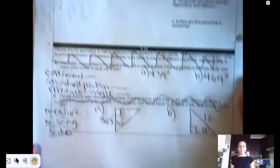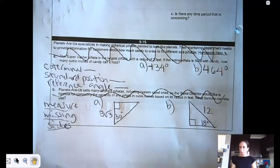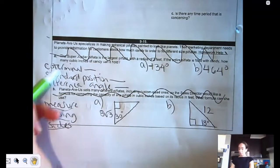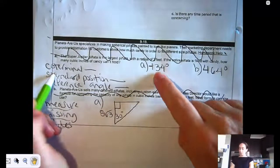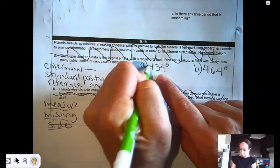I changed 919. So pause it and change it. It doesn't mean you're not doing it. I want you to find the co-terminal, standard position, and reference angle for negative 134.